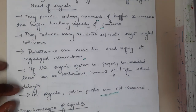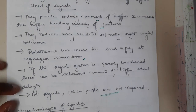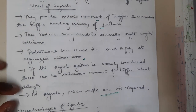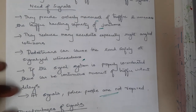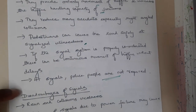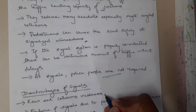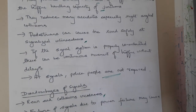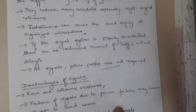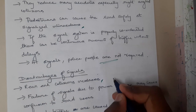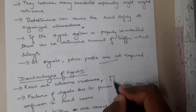With signals, police requirements will be reduced or even removed entirely. Remember that these signals should be automated — if the signals are manual, then a human or policeman would still be required.